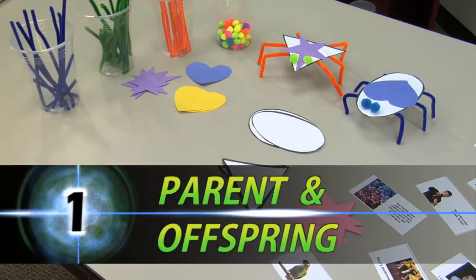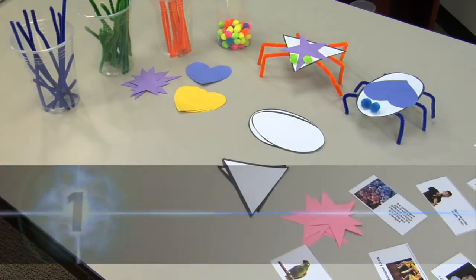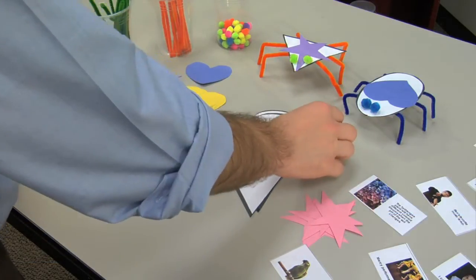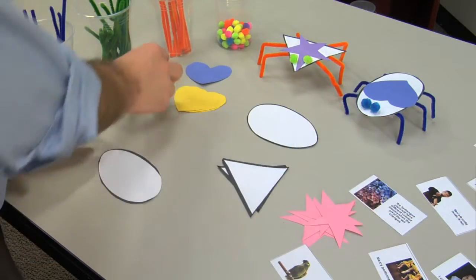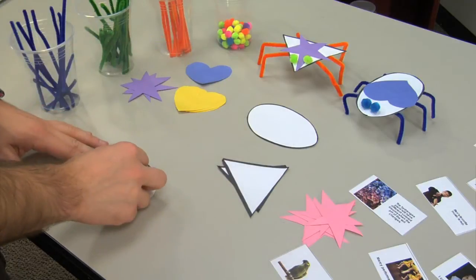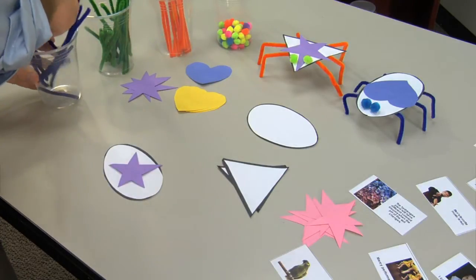Creating Parent and Offspring Insects. For Part 1, students form groups of four to build the parent generation of insects and construct another insect that could be an offspring of the two.